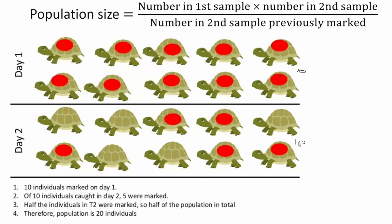So 5 were marked and 5 were not marked — half of the individuals here were marked and half weren't. We had 10 marked on day 1 and 5 marked in the day 2 recapture. All we're going to do is input these numbers into the equation. You do not need to memorise this — they will give it to you in the exam, or it will be on the equation sheet at the front of the exam.